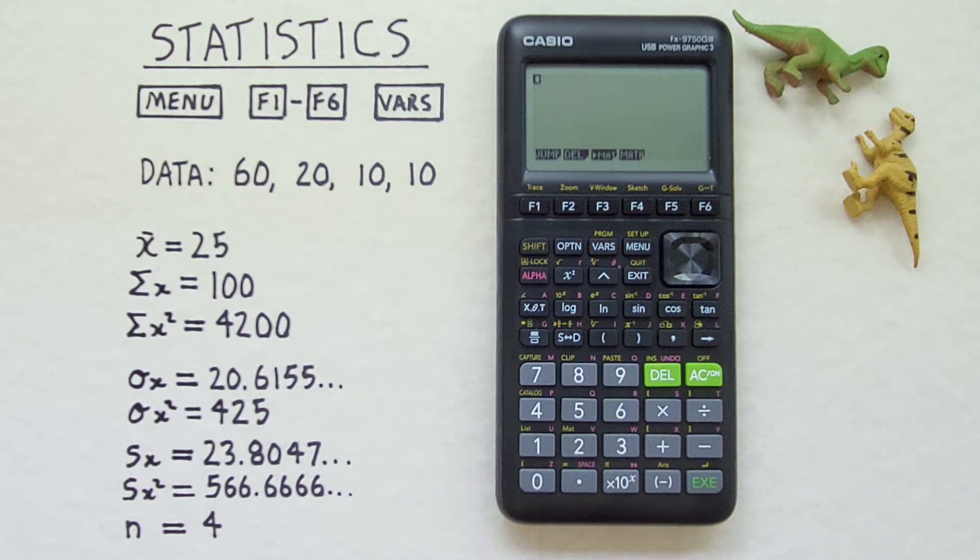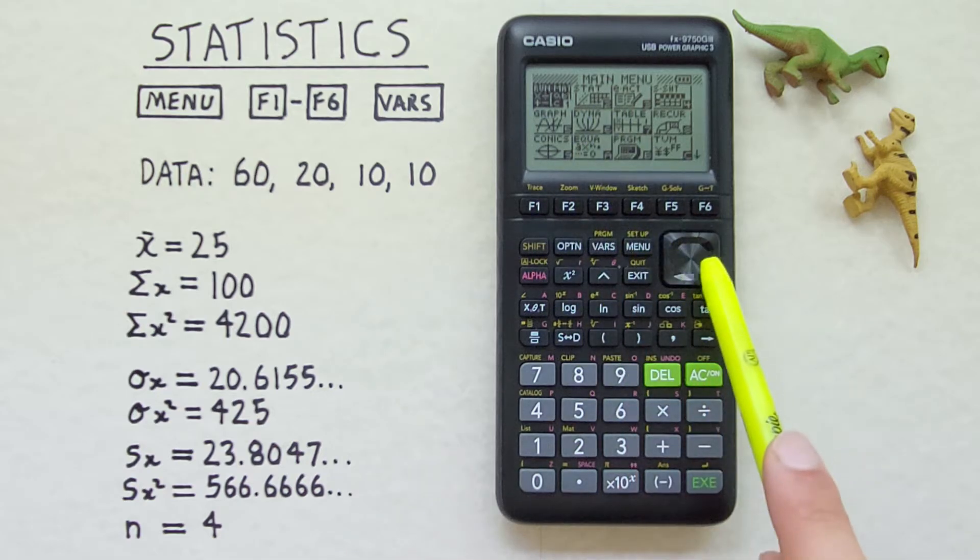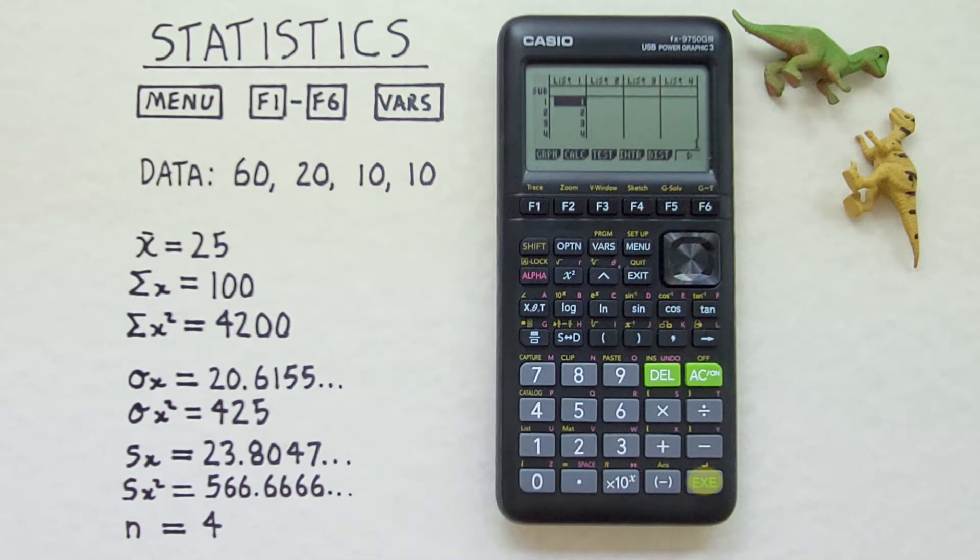If we want to get started working with stats we have to use stats mode on this calculator. To do that we go menu to the main menu and then select stat mode here. We press the EXE and we're in stat mode and it'll display a number of lists like this.